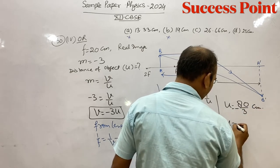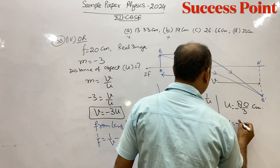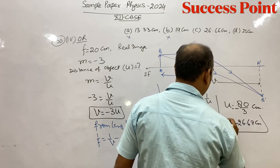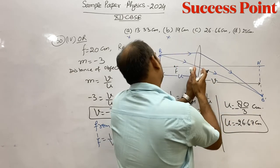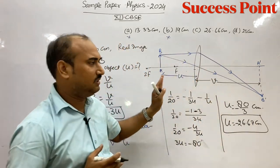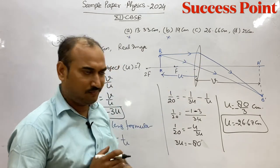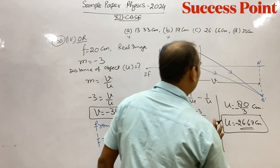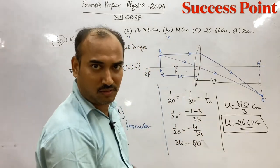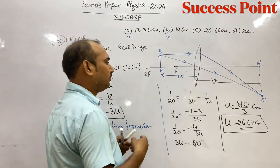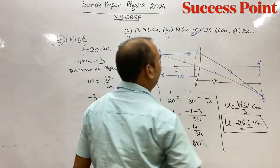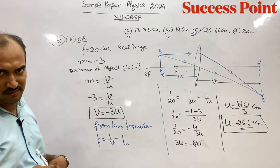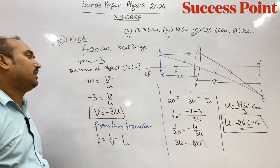So U is minus 80 upon 3 centimeter, which is minus 26.66 cm. All right? Take care.